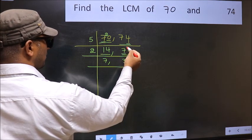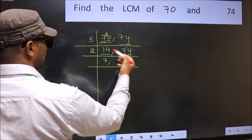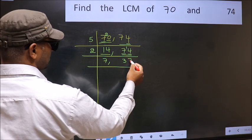7 minus 6 is 1. 1 carried forward 14. When do we get 14 in 2 table? 2 sevens 14.